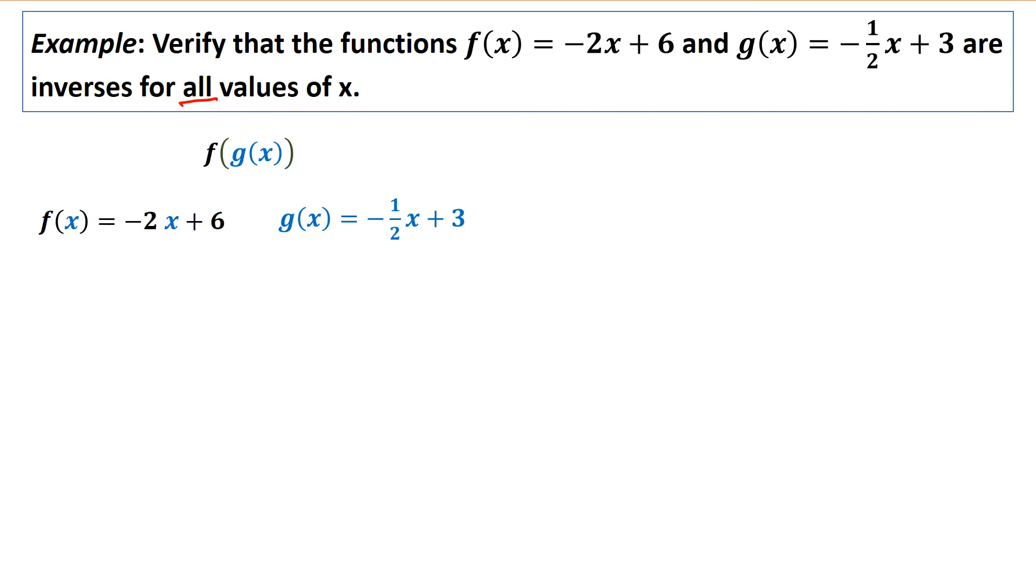I have to find f of g of x, which means I'm going to take the g(x) function, that whole thing, and that entire function gets substituted into x. So here it is substituted, and the only thing left to do is to simplify it. You distribute the negative 2, you get 1x minus 6 plus 6. That's 0. So all we're left with is x. So we get that f of g of x equals x.